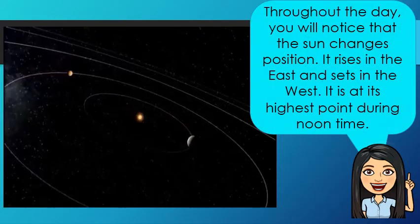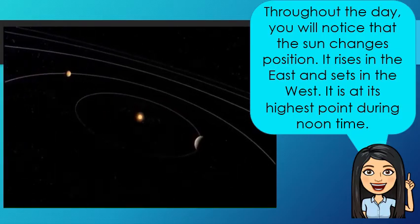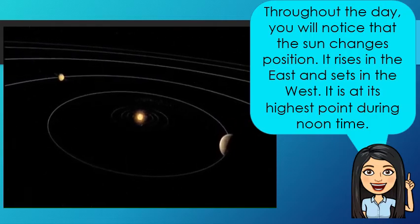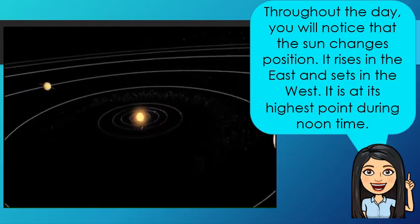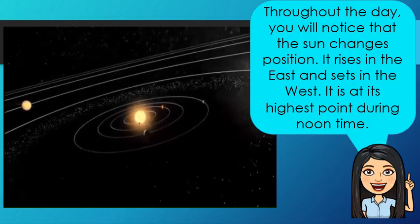Throughout the day, you will notice that the sun changes position. It rises in the east and sets in the west. It is at its highest point during noontime. In reality, it is not the sun that moves from east to west in one day. It is actually the Earth that moves around the sun. Though the sun is so far away, it only takes sunlight about eight minutes to reach the Earth because light travels so fast.